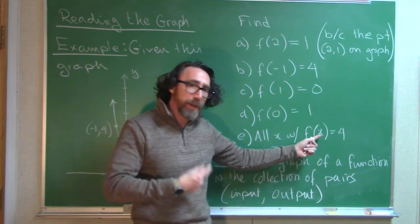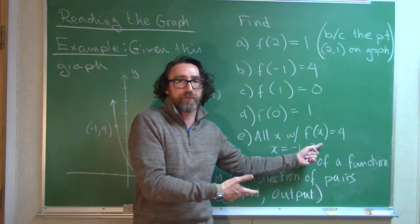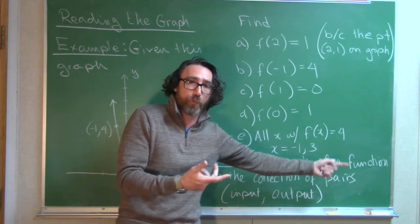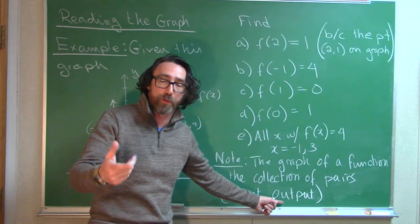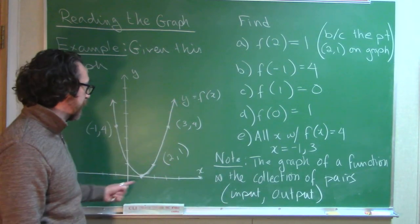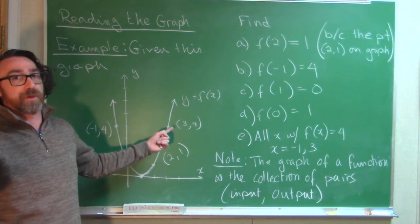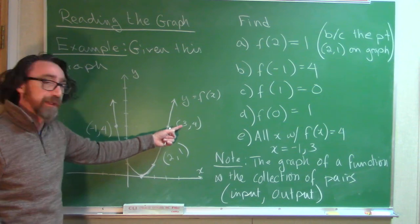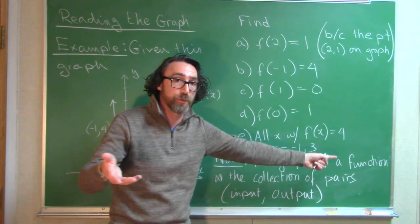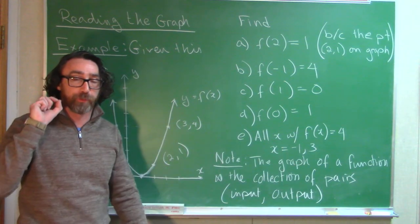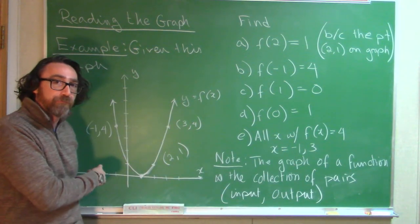So not only can you use a graph to take an input and find the associated output, you can also use a graph to help you solve an equation like f of x equals 4. We want to know what x value to plug in to make a true statement — what x value gives an output of 4. If you want the output, you're looking at the y-coordinate. Find all points on the function's graph with y-coordinate 4, take the x-values, and those are the values to plug in. The graph of a function is an extraordinarily useful tool.